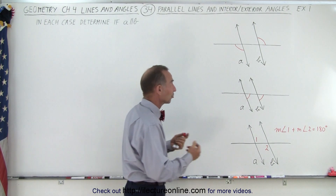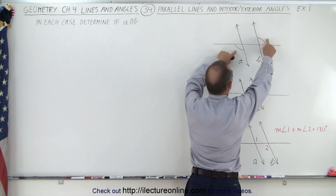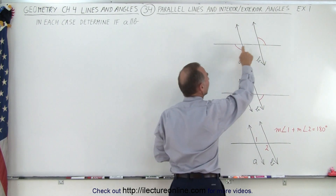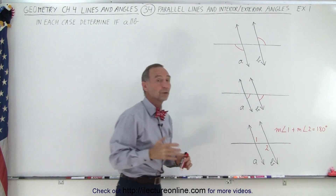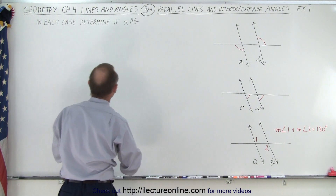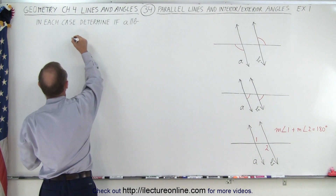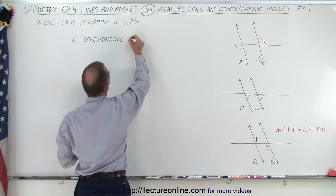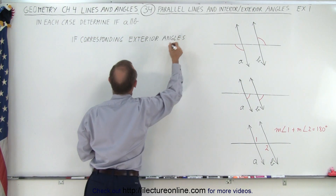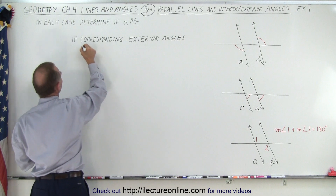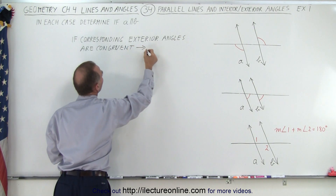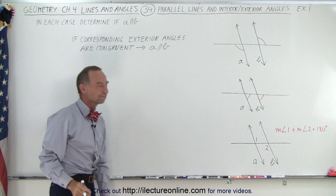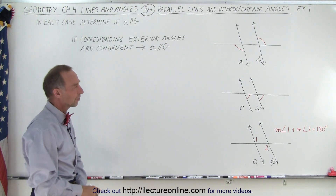In the first example it's straightforward. Here we have what we call two corresponding exterior angles and they're clearly marked as being congruent. So we can say that if the corresponding exterior angles are congruent, then we conclude that line A must therefore be parallel to B. That's straightforward.